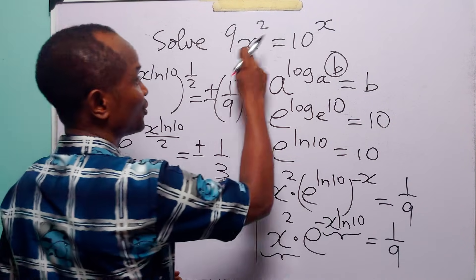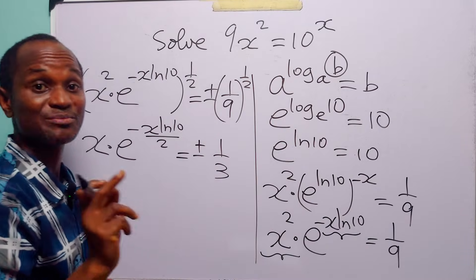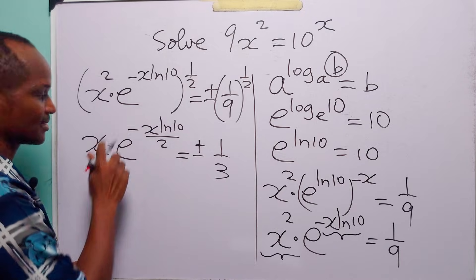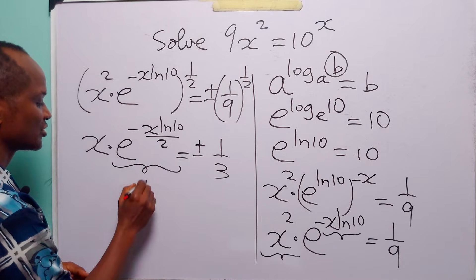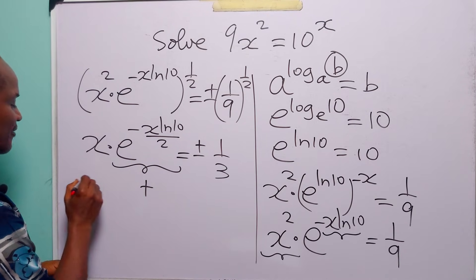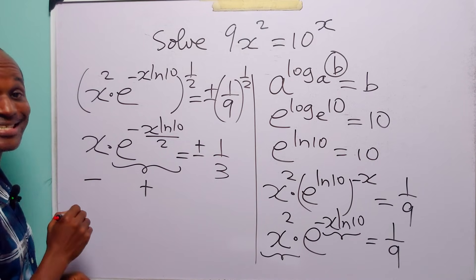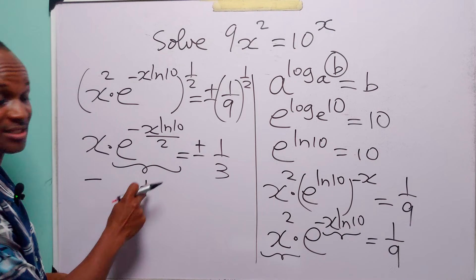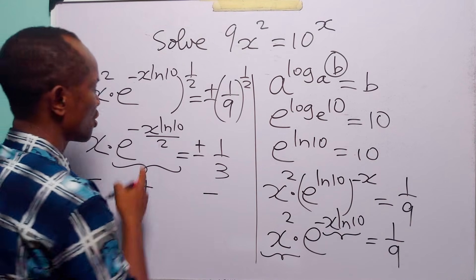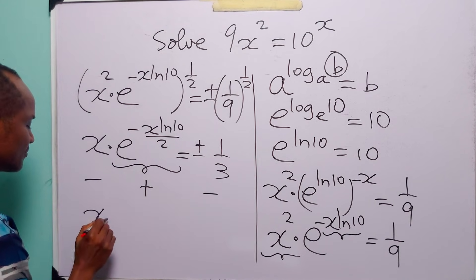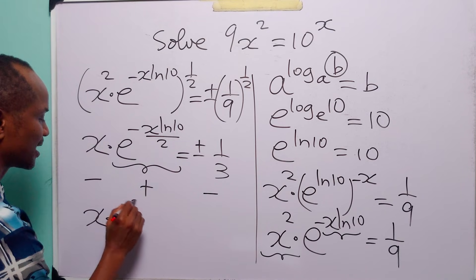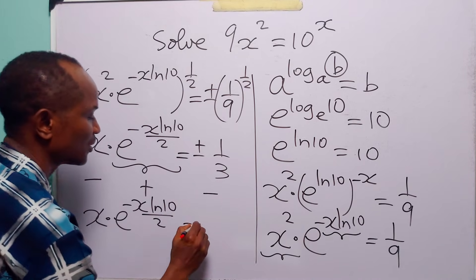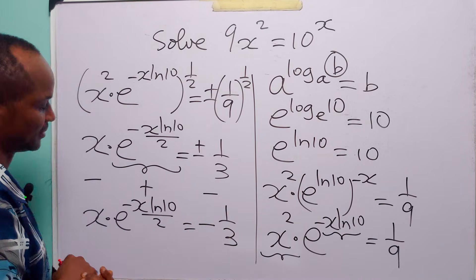But remember that the value of x that satisfies this equation must be negative. Also, remember that for any value of x, the exponential part is going to be positive. We have already noted that x is negative, and negative times positive gives us negative. So we have that x times e to the power minus x ln 10 over 2 is equal to minus 1 over 3.